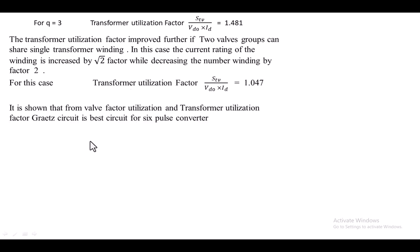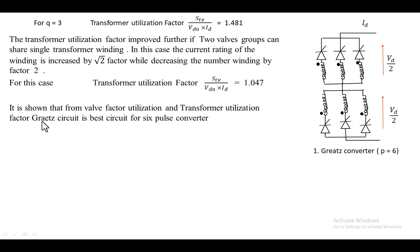We thus achieve better valve utilization as well as transformer utilization with q = 3, r = 1, and s = 2. With this combination, the converter formed is the Graetz converter. It has one commutation group and another commutation group — two commutation groups connected in series. Each commutation group has three devices, hence q = 3, s = 2, and r = 1 meaning only one parallel path. This converter gives a 6-pulse output for the DC voltage.